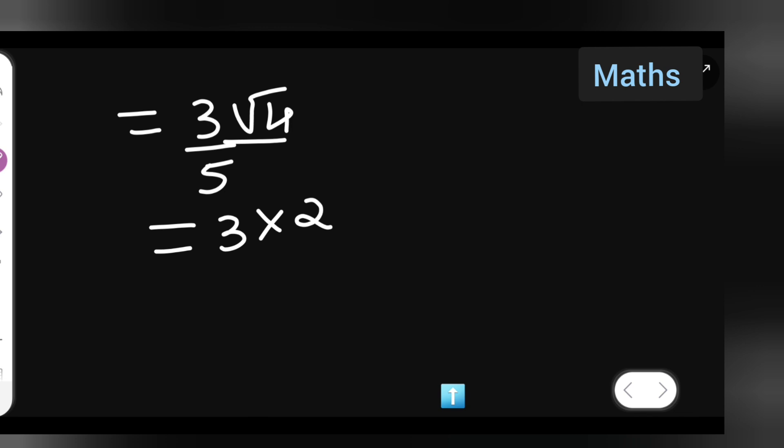So, 3 multiplied by 2 upon 5. So, you will get 3×2 is 6 upon 5 is your answer.